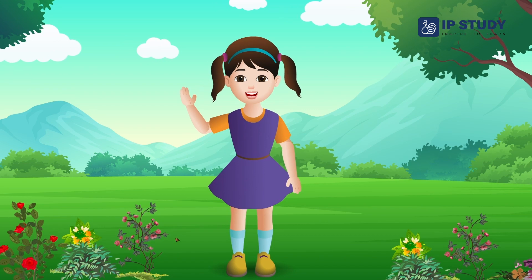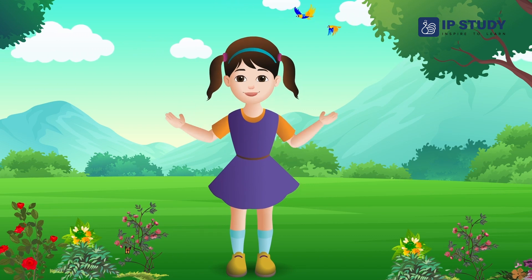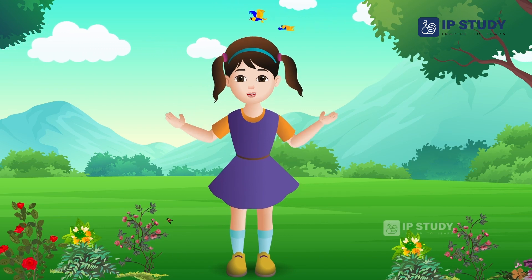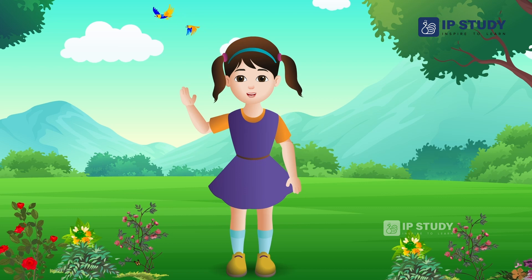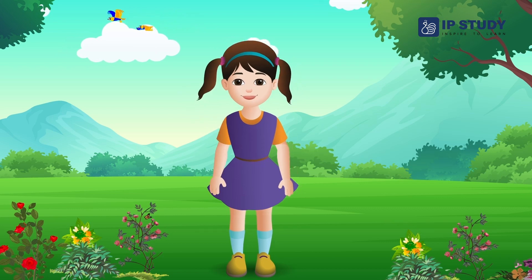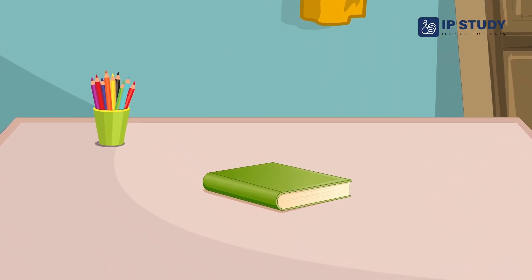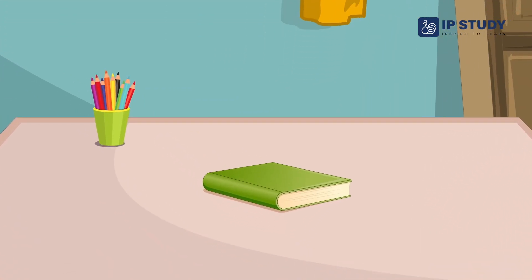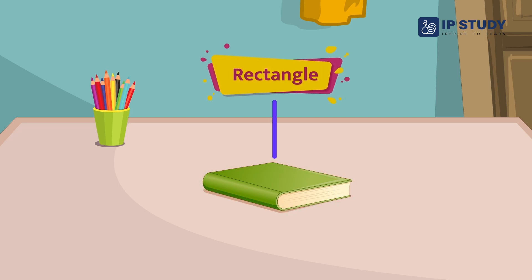Kids, let's look at some examples of things we find around us in rectangle shape. Can you see a book kept on the table? The shape of this book is rectangle.